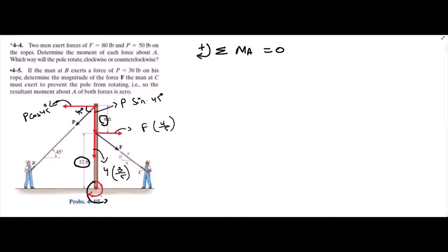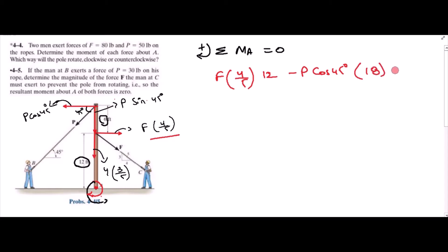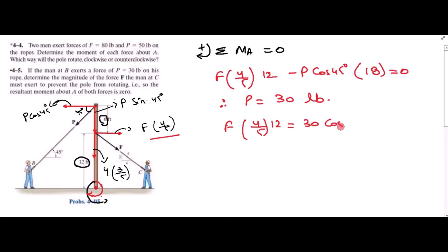The horizontal component trying to rotate the pole clockwise is positive, with moment arm 12. The other component is trying to rotate it counterclockwise, so it is negative, with moment arm 18. Setting the resultant moment equal to zero, with P equal to 30 lb: F·(4/5)·12 = 30·cos45·18. Solving, F is equal to 39.8 lb.